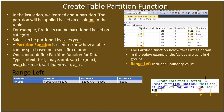With RANGE LEFT, the boundary value 6,000 is included in the first group, so group one is values 6,000 and less. The next boundary is 12,000, so group two is greater than 6,000 up to and including 12,000. Then group three goes from 12,000 to 18,000, and group four covers everything above 18,000.